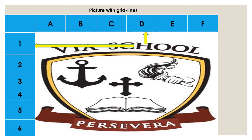Now let's take another example. I want us to locate the book in our emblem. You take your finger, put it on the book, and move up. You will see that it leads us to the letter C. So we now know that our book is positioned in C. Now we need to know the number. We put our finger again on the book and move to the left. We see that the book is located in 5. So we say the book is found in C5.